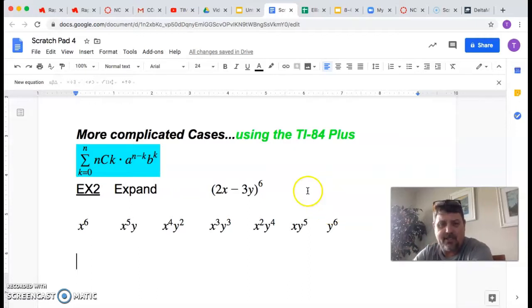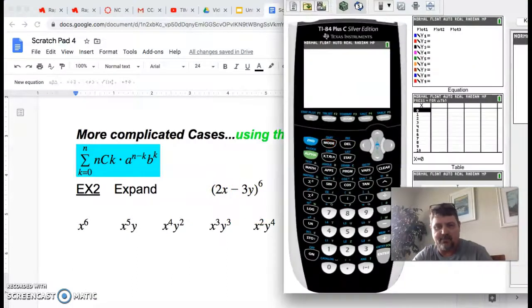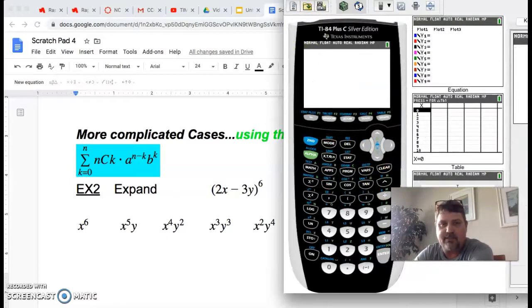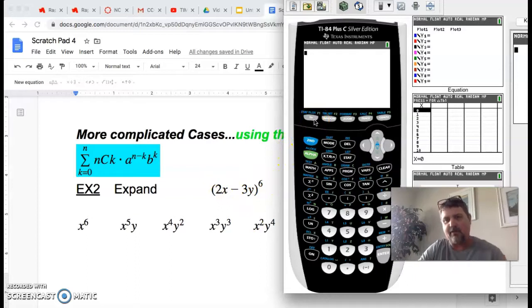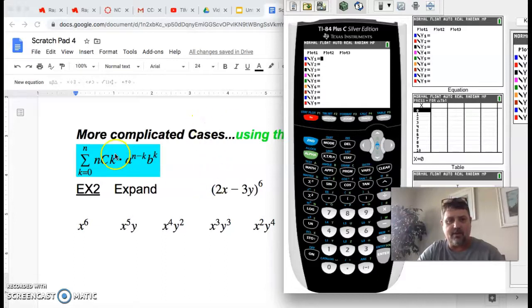Now what I've found over the years that helps folks out is you can put this in your calculator, just like we did the last one, but a little more enhanced. This right here, the reason I call this a more complicated case, is you got coefficients in front of your x and your y. So the way I can handle that in my calculator is I go to y equals, and this time, you know that this part, when you see me circling right here, n choose k, it's still 6 choose x. So that hasn't changed.